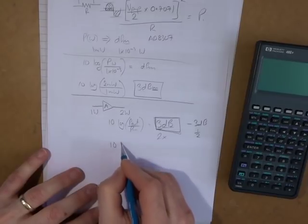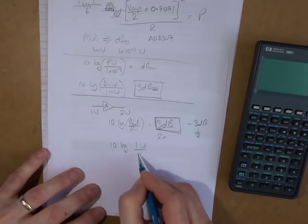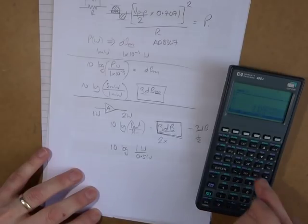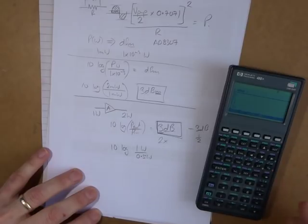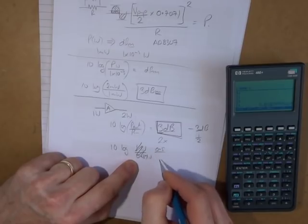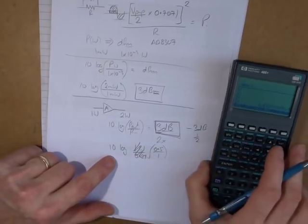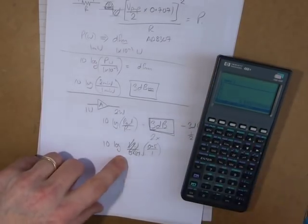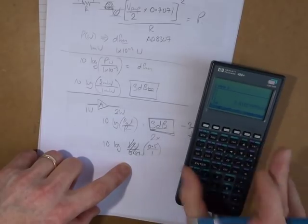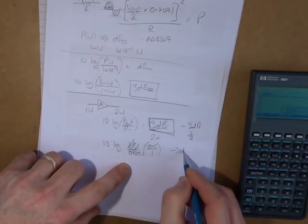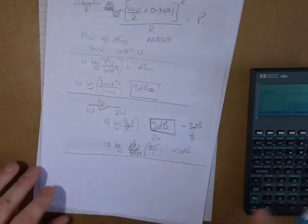We can prove that: 10 log of one watt going in and half a watt coming out. Power out is 0.5 watts over power in of one watt — so 0.5 divided by one equals 0.5, log that, then times ten, and now we have our minus 3 dB. So that's one way of expressing the gain of an amplifier by means of power.